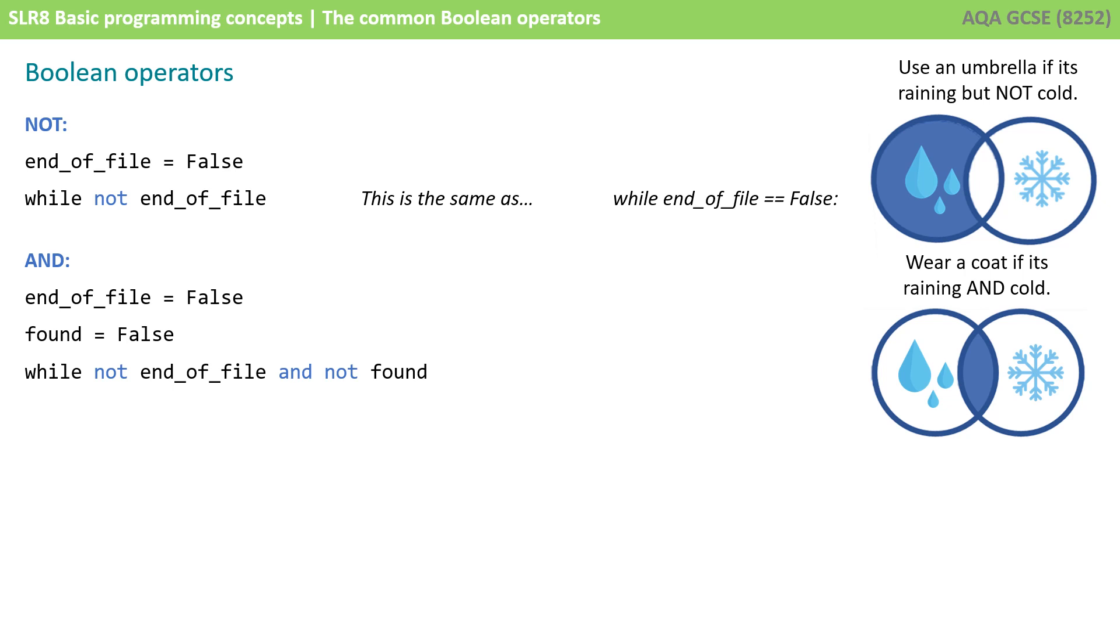we've got end_of_file and we've set that to false. And we've got another Boolean variable called found and we'll set that to false. We're saying while we're NOT at the end of file AND NOT found, so NOT equals false, then carry out a statement. Both parts have to be true for the whole thing to be true.